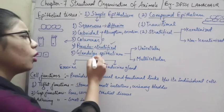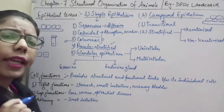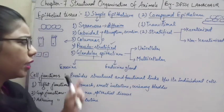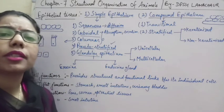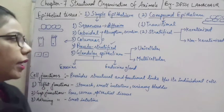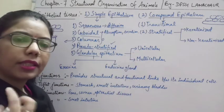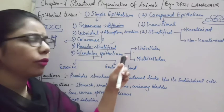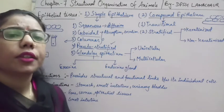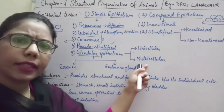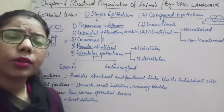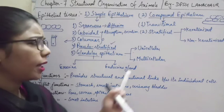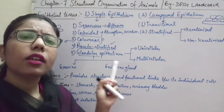Glandular epithelium can be classified on the basis of number: unicellular (isolated cells) and multicellular (group of cells). Unicellular glandular epithelium can be found in the stomach, while multicellular glandular epithelium is found in the intestine.